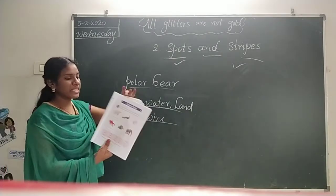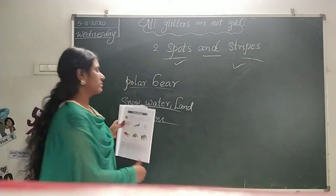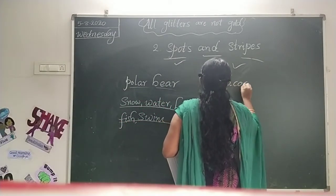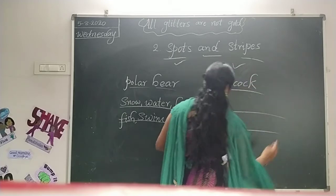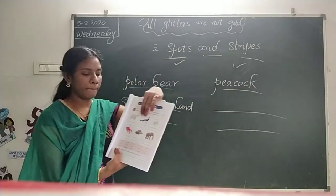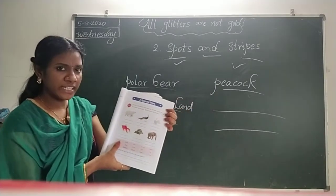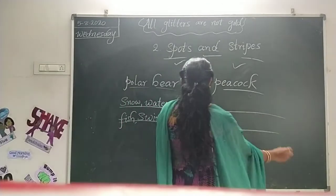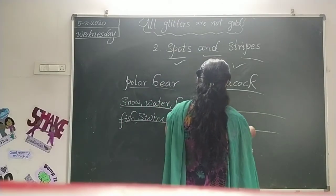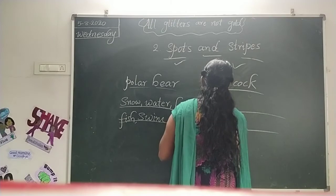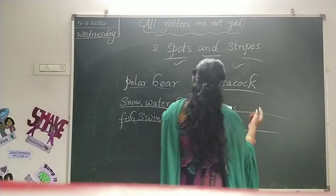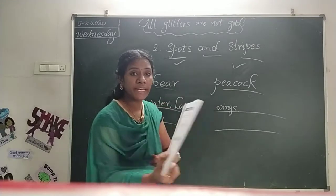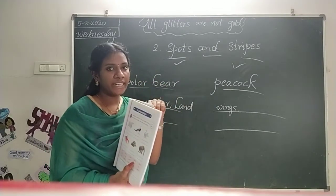And the next one — what is this? Peacock. Now we have arms — peacock. Does peacock have wings? Yes. So we write wings. Snow? No. Worms — worms means small insects — yes, peacock can eat worms.